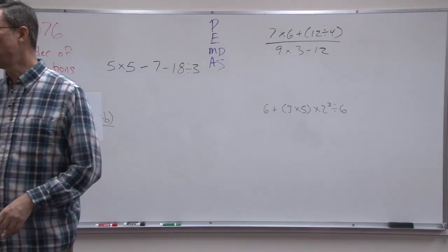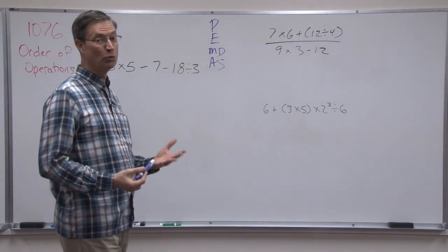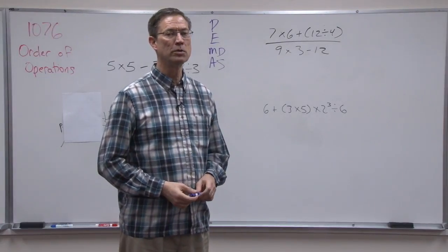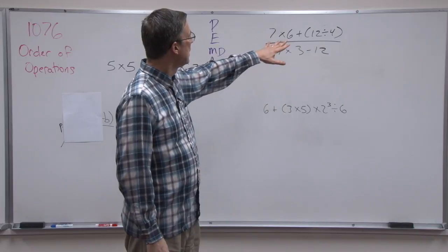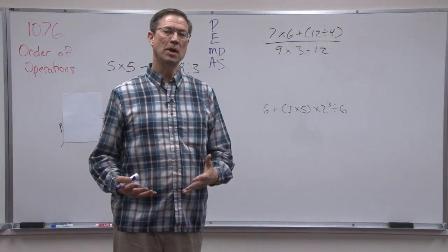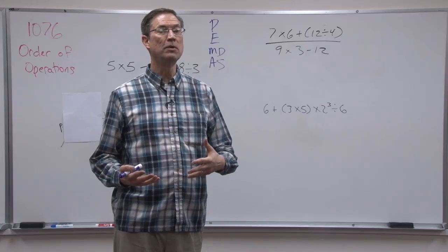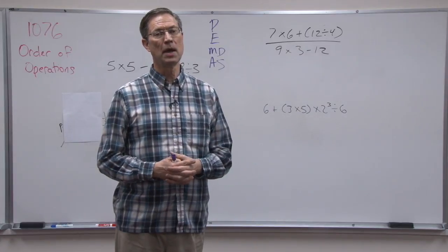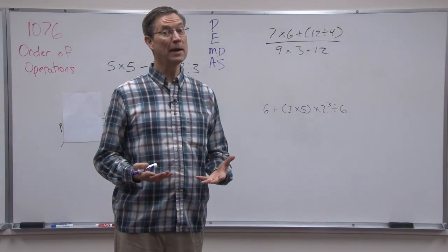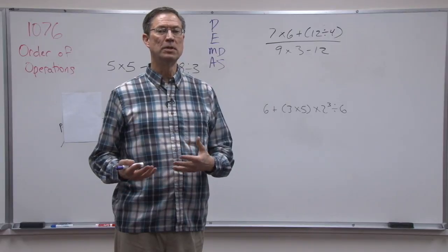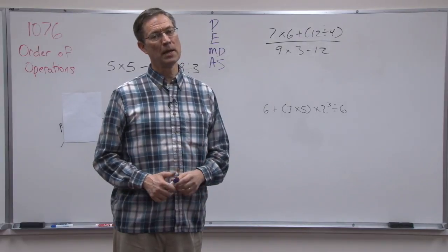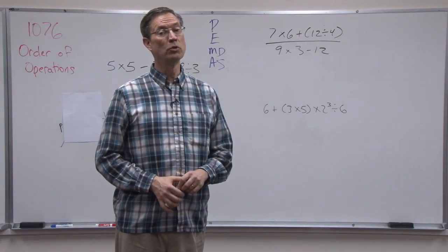Mathematicians who are smarter than you and me have made some rules that we have to follow in order to solve expressions. Some of those rules are there are certain operations that we have to do before we do others. For instance, we have to do any multiplying or dividing before we do addition and subtraction as the very last step.